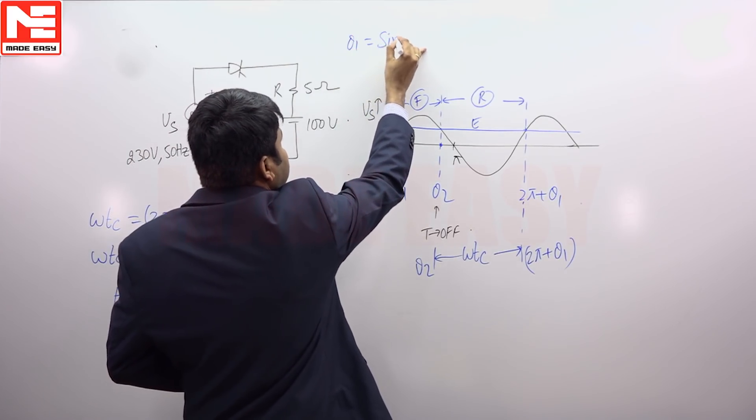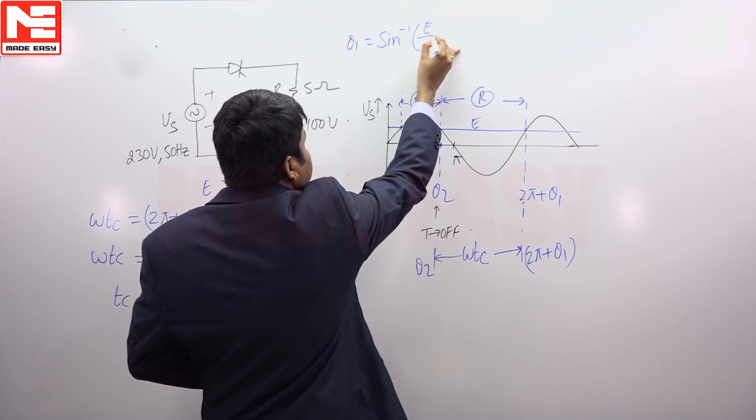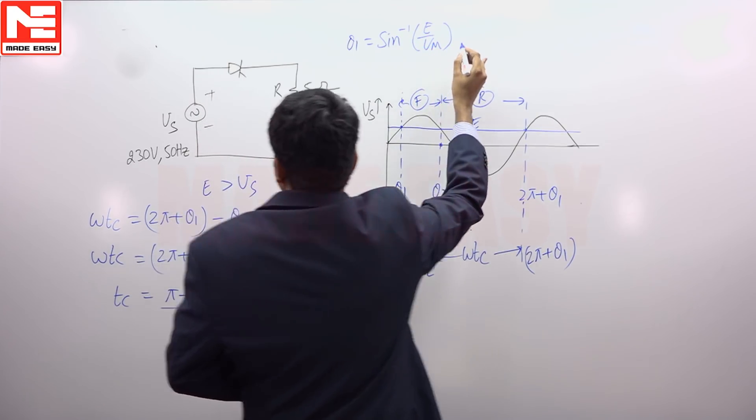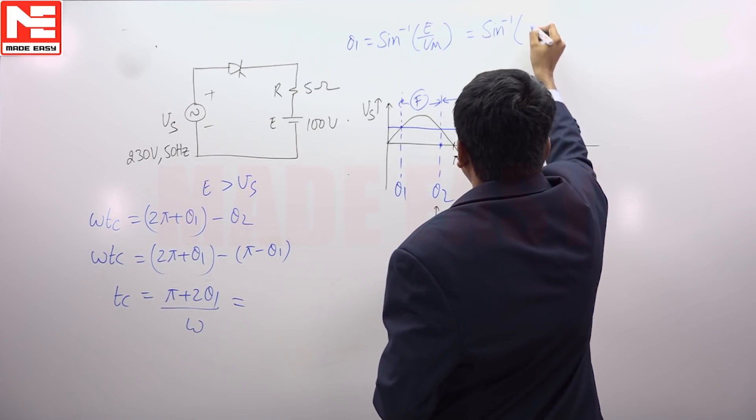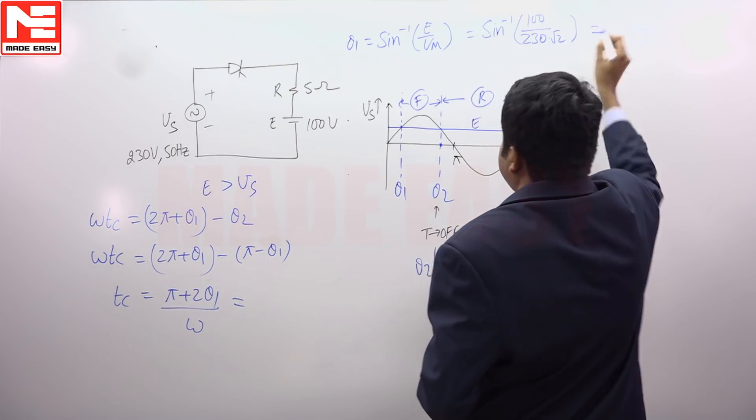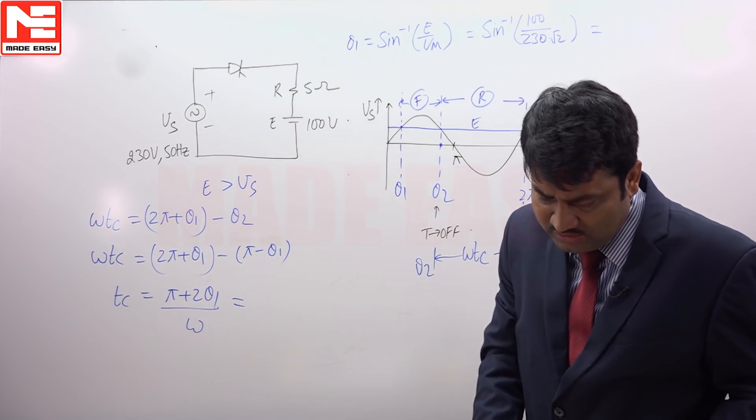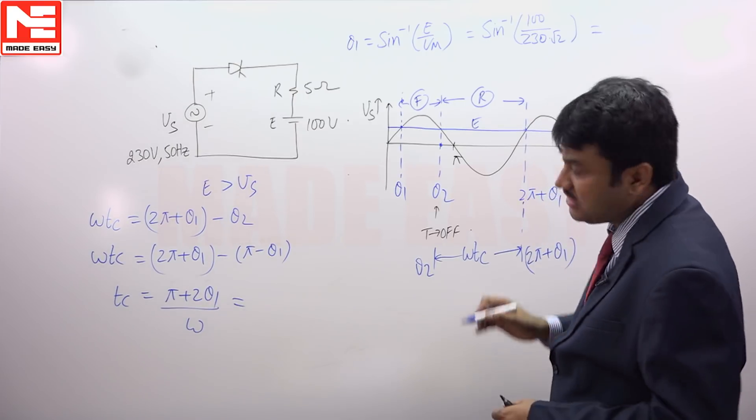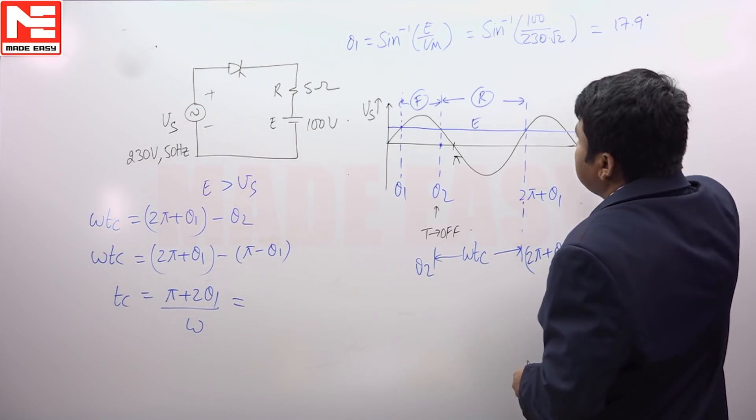So theta 1 is sine inverse E by Vm. So E value is given sine inverse 100 by Vm is 230 into square root of 2. So after calculating, you will get theta 1 value 17.9 degree.